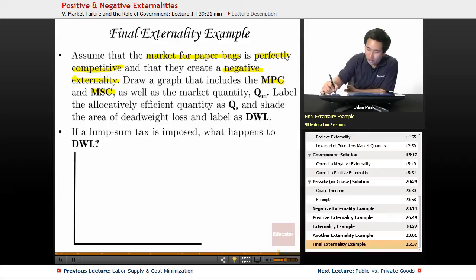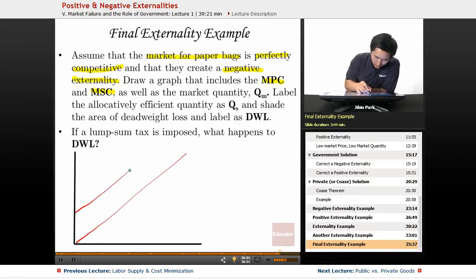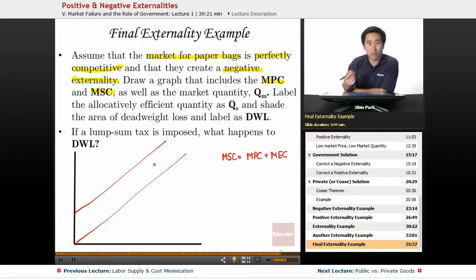Let's draw this first. The MSC and the MPC - if you have two lines like this, remember the formula is MSC equals MPC plus MEC. The smaller one is going to be the marginal private cost, and this is the marginal social cost.